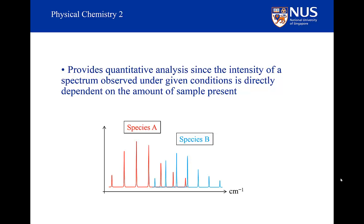What other things can we do? Because we can relate the intensity of a spectral line to concentration through the Beer-Lambert law, we can perform quantitative analysis. So the information about molecules in interstellar space allows us not only to identify those molecules but also to quantify them.